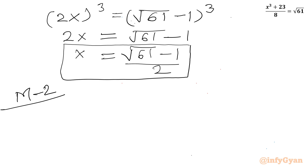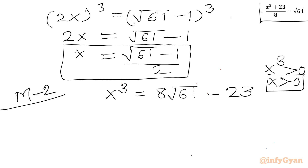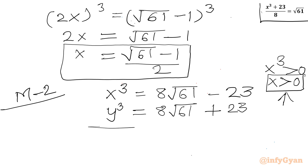Now for Method 2. From x³ = 8√61 − 23, we can see x³ > 0, so for real solutions x must be positive. We introduce a conjugate: let y³ = 8√61 + 23.